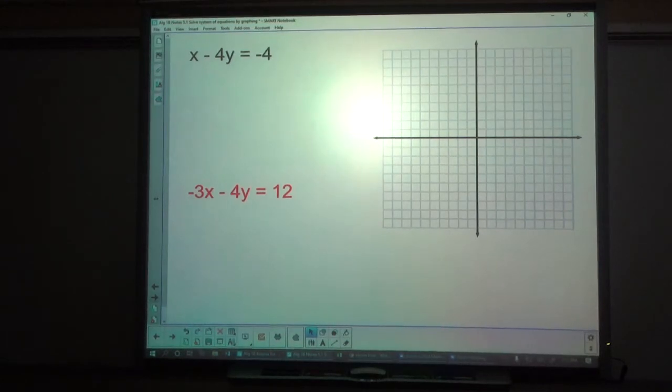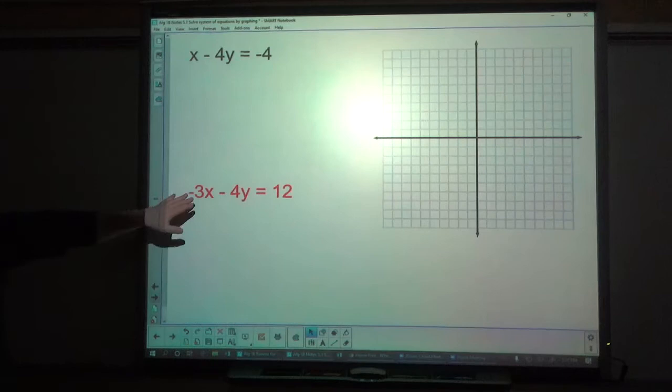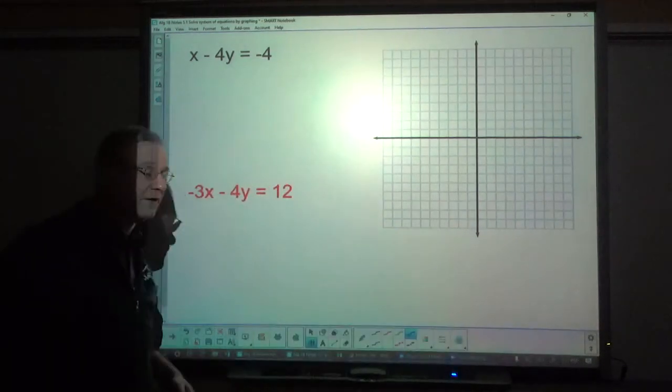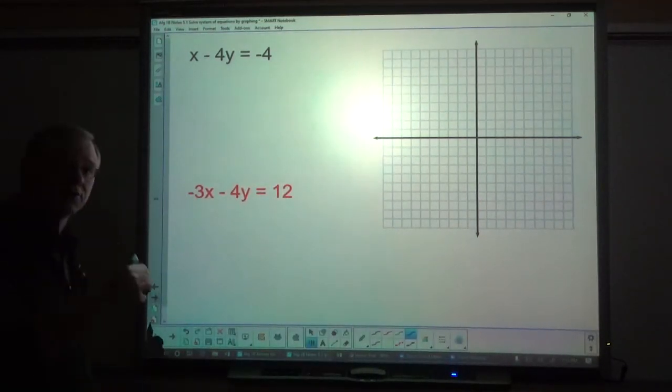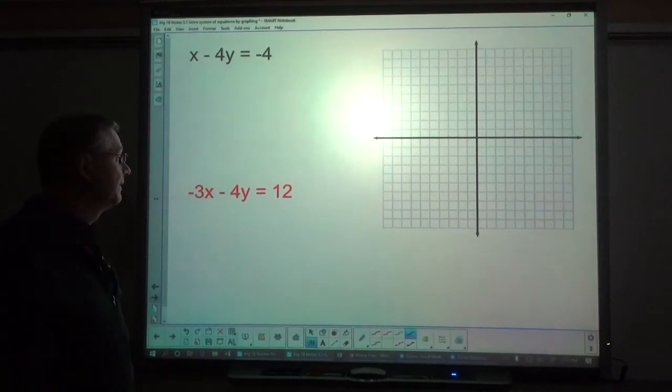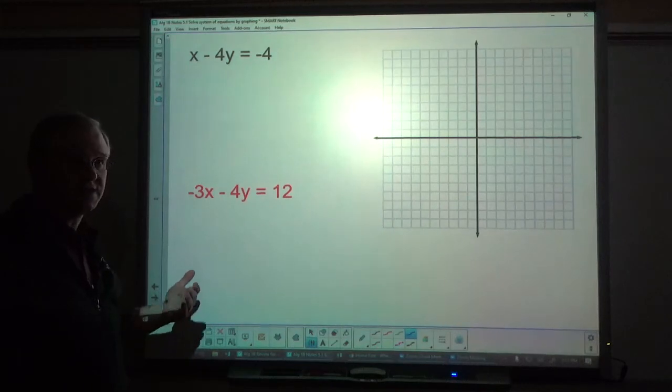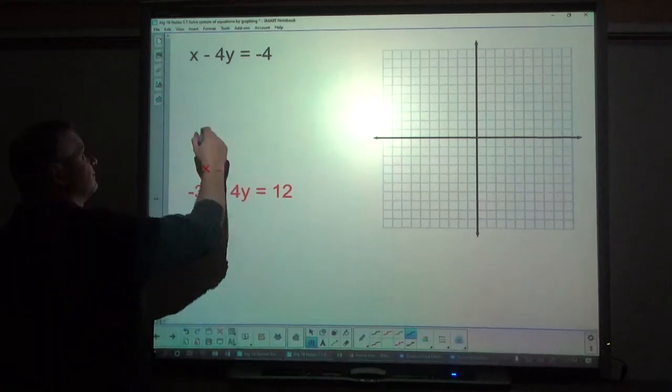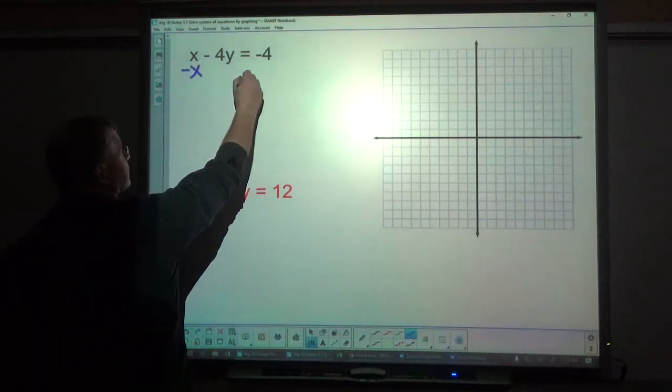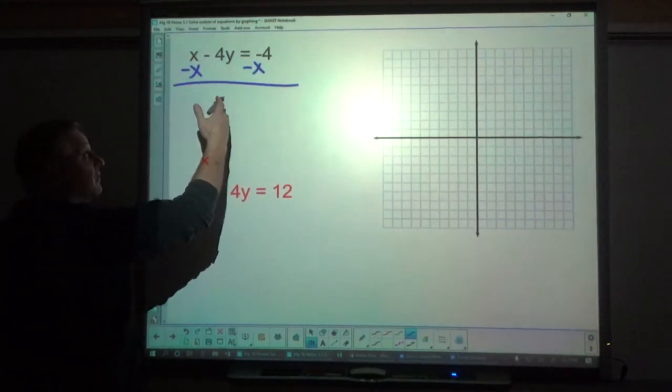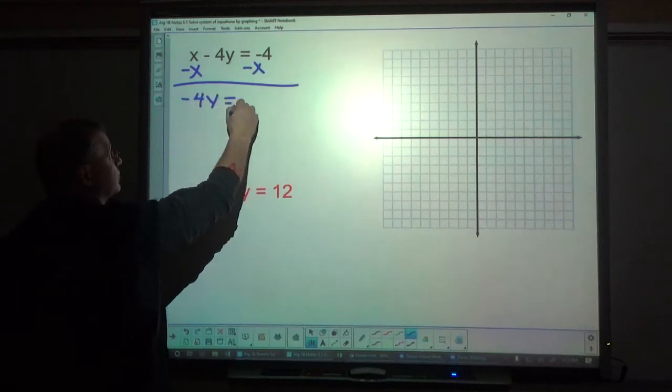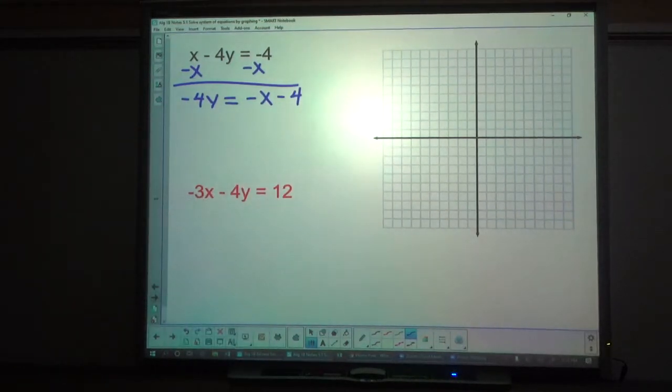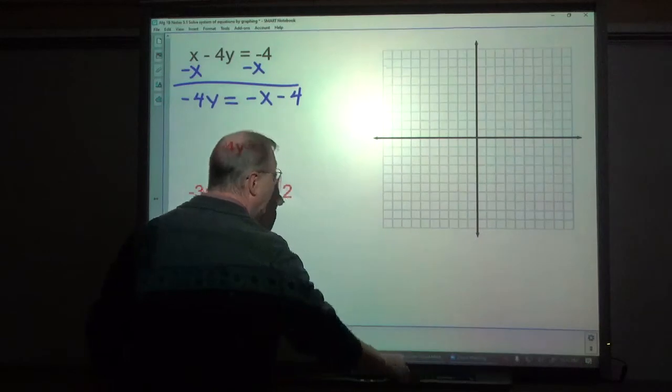We're going to try another type of problem. Now this one is a little bit different. These are in standard form, so we need to rewrite them so that they're in slope-intercept form to make it easier for us to graph. Now it's not required that you do that. There are other methods that we haven't really talked about much that you could use to find the x and the y-intercepts. But on these, I'm just going to have us rewrite them in slope-intercept form.